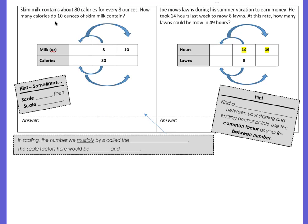A couple more examples. Skim milk contains about 80 calories for every 8 ounces. How many calories do 10 ounces of skim milk contain? So what are we comparing? We're comparing 80 calories for every 8 ounces. So set up our table. We're comparing milk to calories. Or you could have it the other way, calories to milk. Since our table is already set up this way, we have 8 ounces of milk as 80 calories. We want to know how many calories does 10 ounces of milk have.